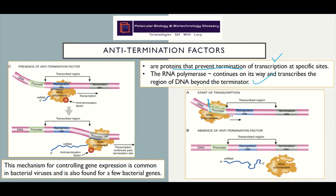Transcription normally starts at the promoter where the RNA polymerase will bind. Then it will transcribe this region, and once it reaches the termination site, the mRNA is released. As you can see, once it reaches this termination site, the RNA polymerase will be released as well as the mRNA away from the antisense strand.